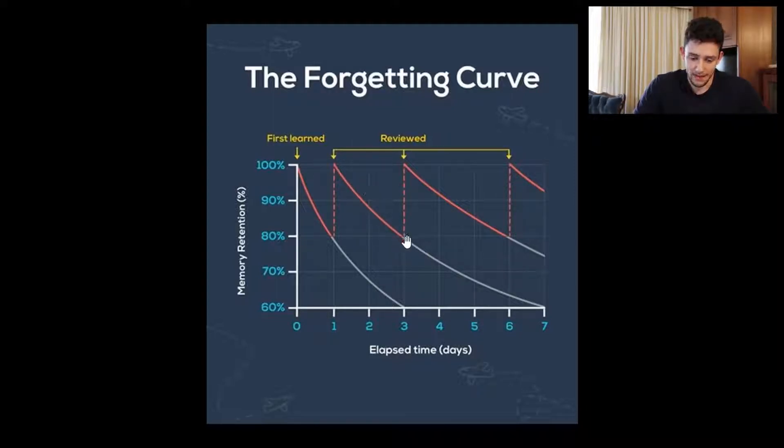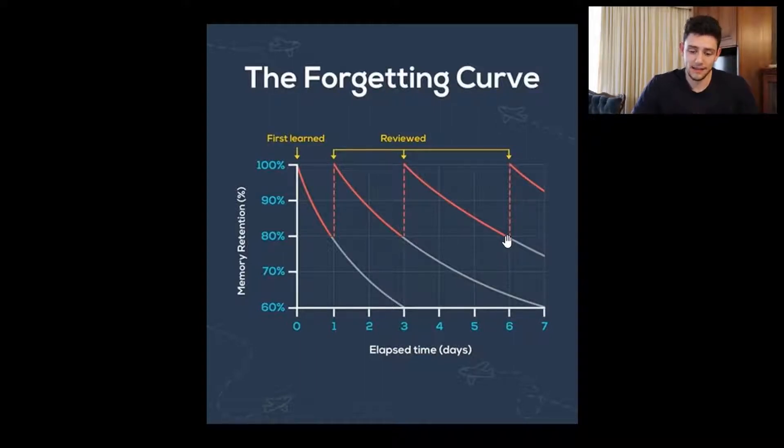Then Anki schedules another card two days later, you review it again, and you're forgetting it at an even slower rate. Anki keeps scheduling these cards until you reach a point where you retain the information. Brand new or difficult flashcards are given to you more often, and easy flashcards that you get correct all the time are shown less frequently. Spaced repetition has been proven to be a more effective way of learning than simply sitting down and reading the same body of text for hours. It's also a form of active learning because you actually have to think about your answer rather than passively reading from a textbook.